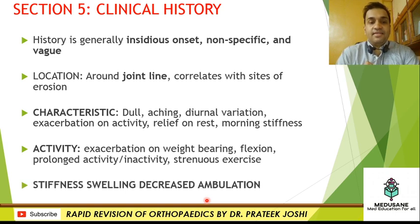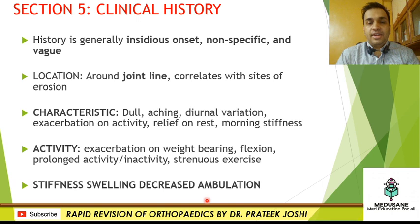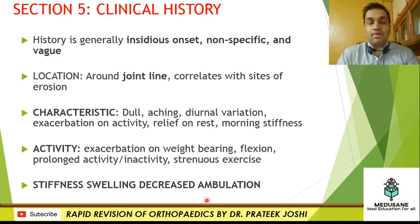There will be stiffness, swelling of the joint, and a history of decreased ambulation. When discussing orthopedic case history, always address the disability of the patient — their inability to perform activities of daily living. The mnemonic for activities of daily living is DEATH: D for dressing, E for eating, A for ambulation, T for toileting, and H for hygiene or personal hygiene. In the case of stiffness, swelling, and decreased movement, the patient will have problems with ambulation, toileting, and personal hygiene.